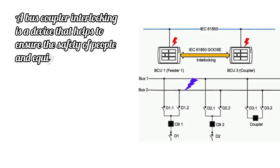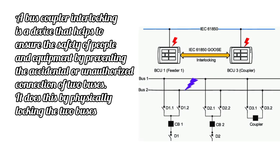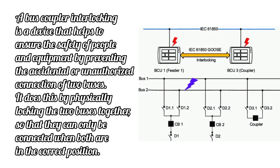Bus coupler interlocking is a device that helps to ensure the safety of people and equipment by preventing the accidental or unauthorized connection of two buses.